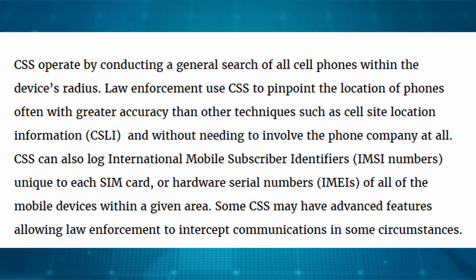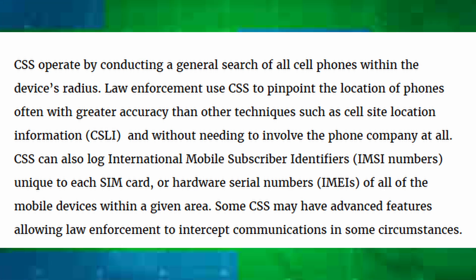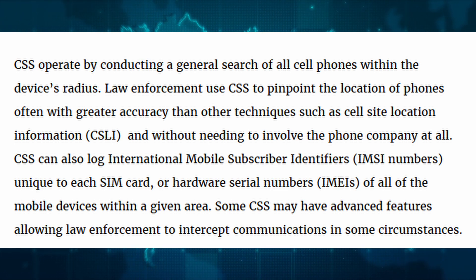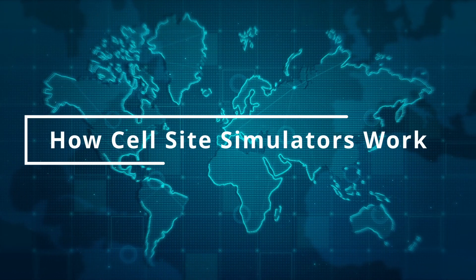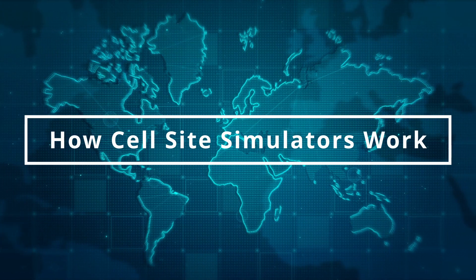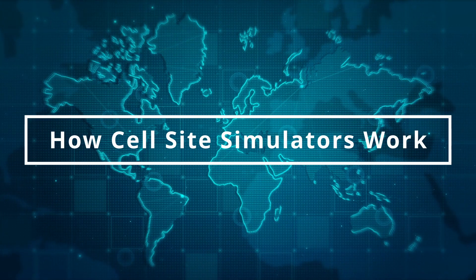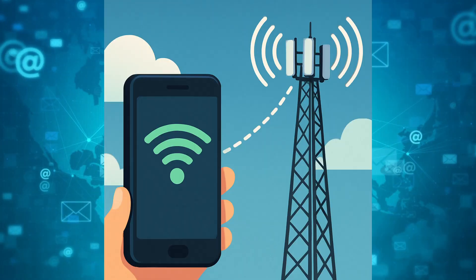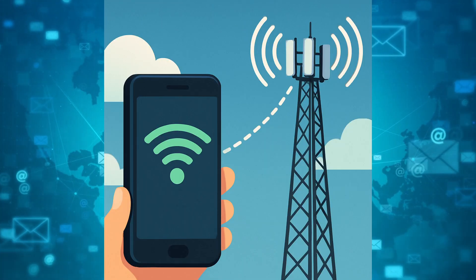CSS can also log international mobile subscriber identifiers (IMSI numbers), unique to each SIM card, or hardware serial numbers of all the mobile devices within a given area. Some CSS may have advanced features allowing law enforcement to intercept communications in some circumstances. When you travel around with your cell phone in your pocket, they connect to things called base stations — devices that provide you with cell service wherever you go.